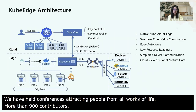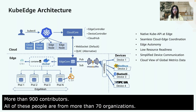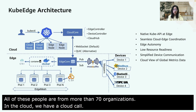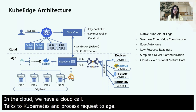Let's take a look at the KubeEdge architecture. Basically, KubeEdge is a natively extended Kubernetes. We have two components: cloud and edge. In the cloud, we have a cloud core that talks to Kubernetes and processes requests to the edge. The edge has an edge core that talks to the container engine and devices. The edge takes as little as 17 megabytes of memory footprint to run, and also supports OCI-compliant container runtimes.